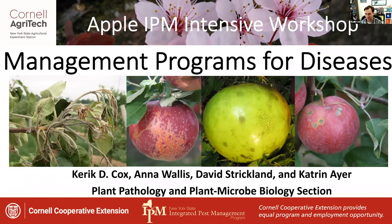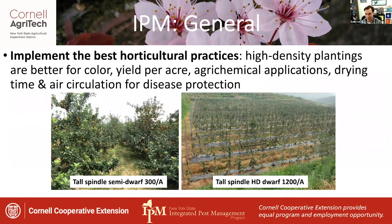For a general overview of managing programs for all the different diseases, the best place to start is with the best horticultural practices. In this day and age, high-density plantings are the best possible planting system for disease management. While they may be younger, smaller, and maybe a little more susceptible to the spread of fire blight, they're always better for color, yield, fungicide coverage, drying time, and air circulation, which can often be the best form of protection against disease.